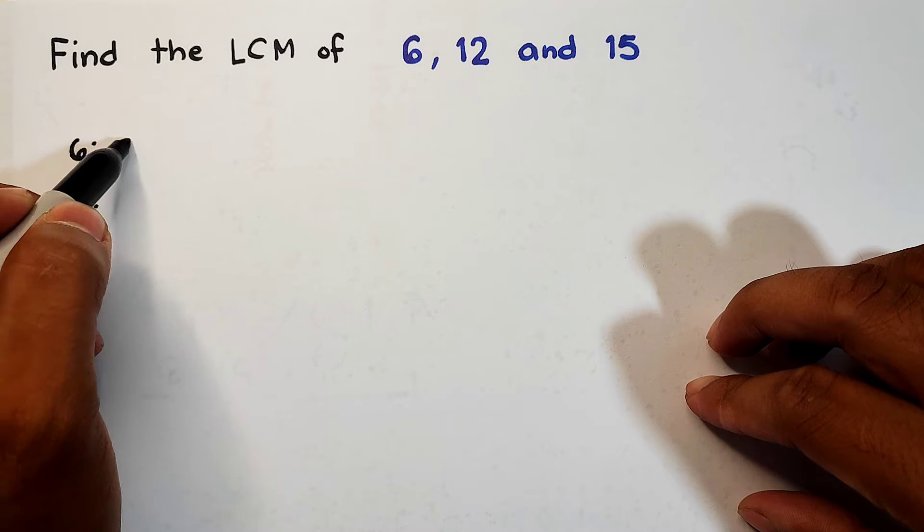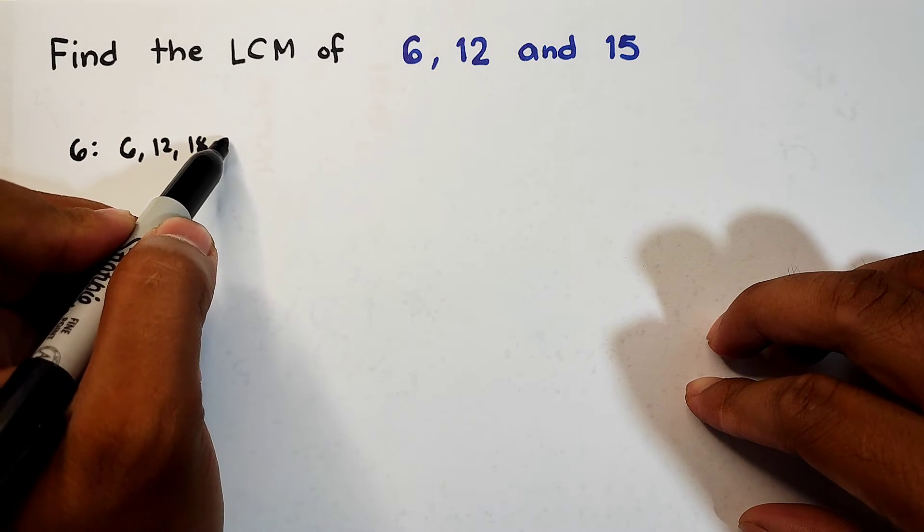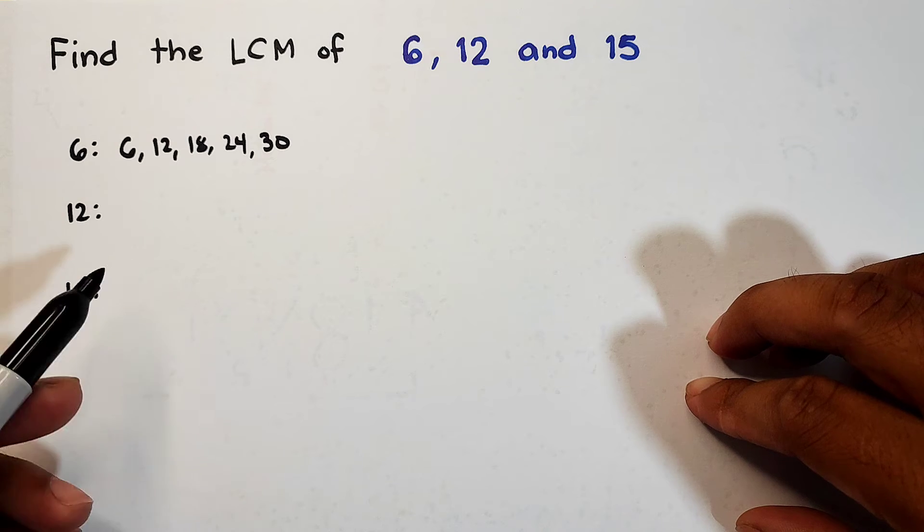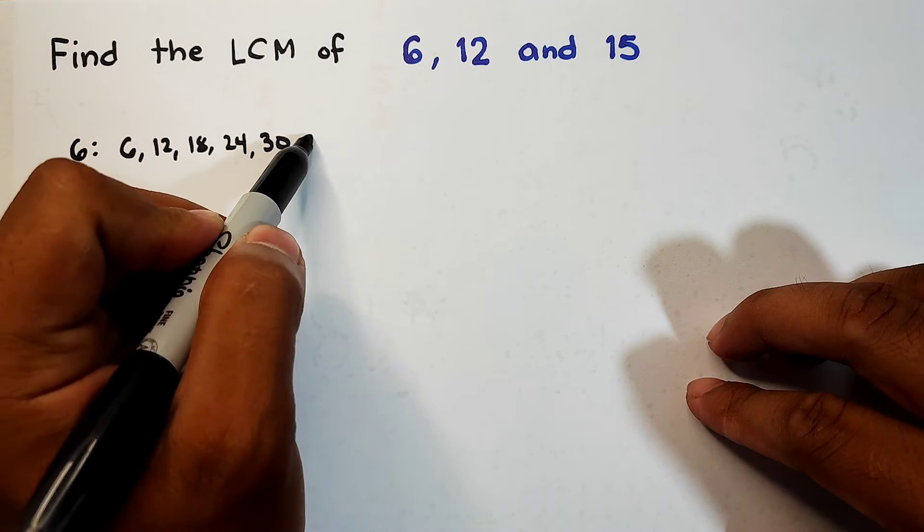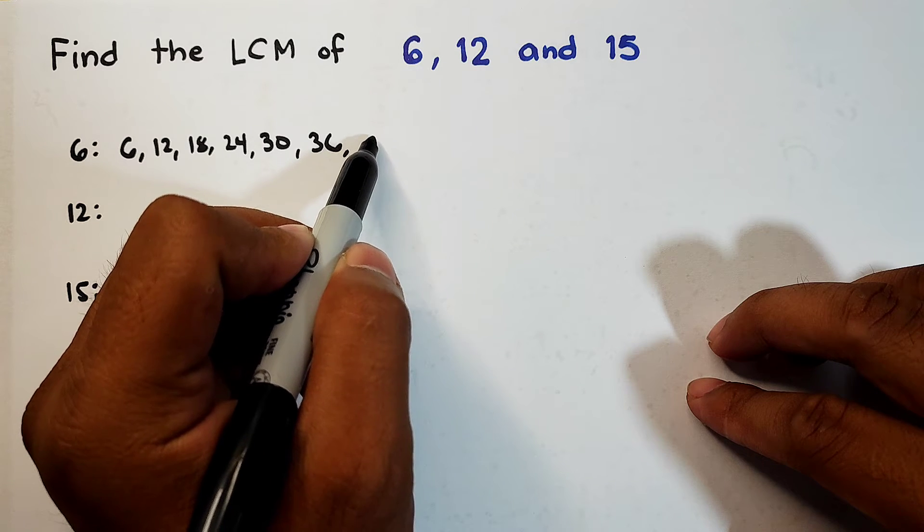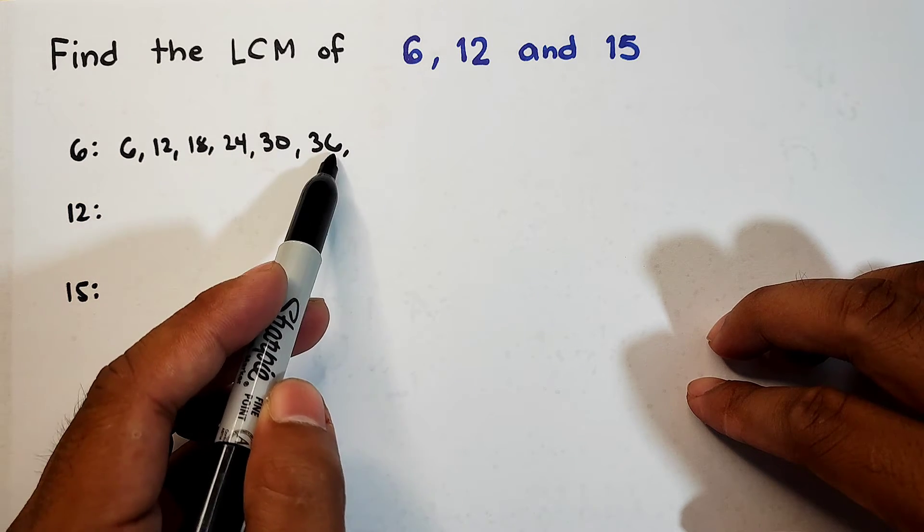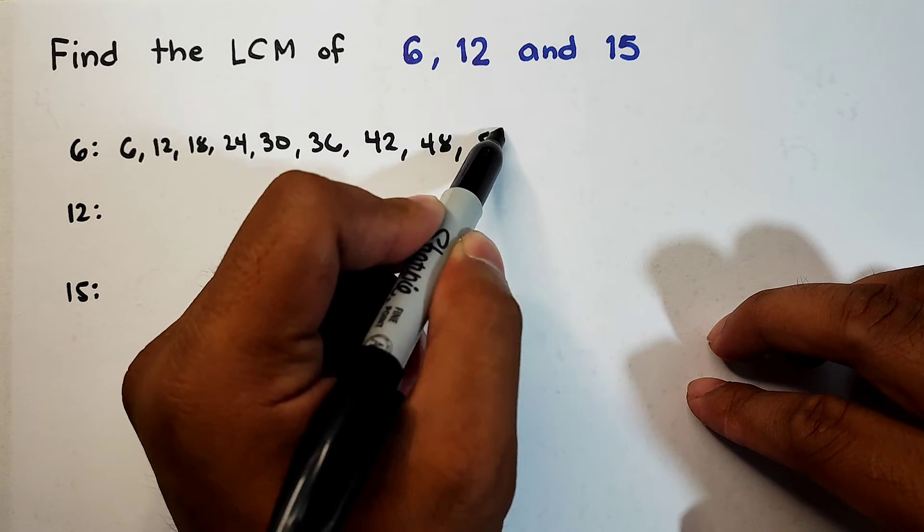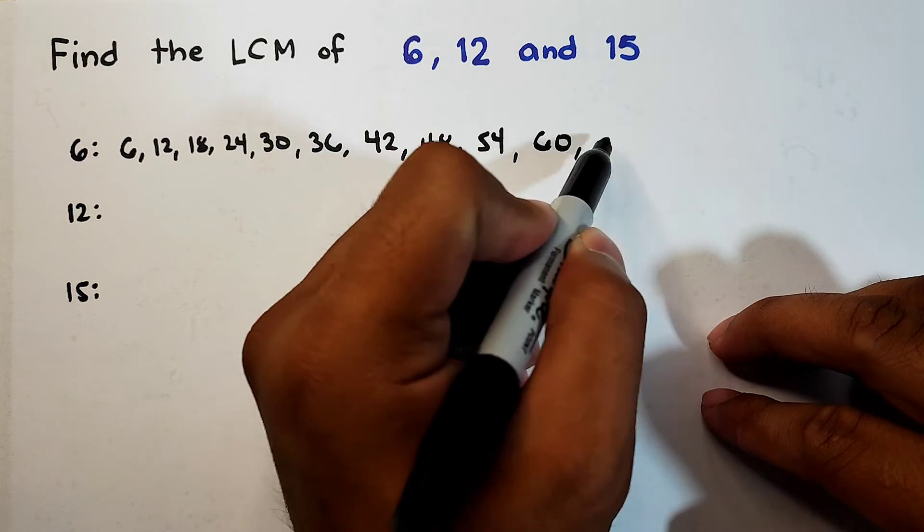For 6, the multiples are 6, 12, 18, 24, 30. Guys, in this case we are trying to find the multiples of 3 numbers. Continuing: 36, 42, 48, 54, 60, 66, and so on.